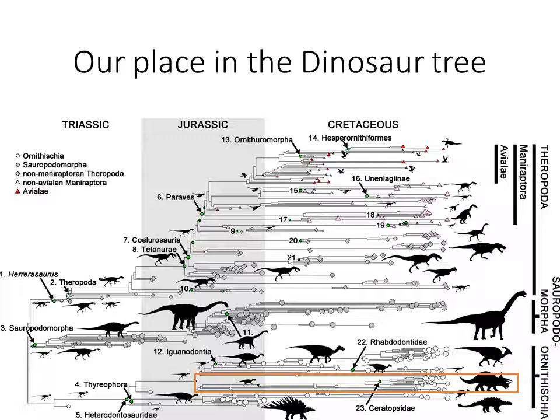Going back to our place in the family tree — I'm going to show you this every time we deal with a new group of dinosaurs. We are still in the Ornithischians, but we're in a very relatively diverse group of organisms. One thing to note: this group doesn't appear until sometime in the middle of the Jurassic, and that's going to have really important implications for where they're going to be found on the surface of the Earth.